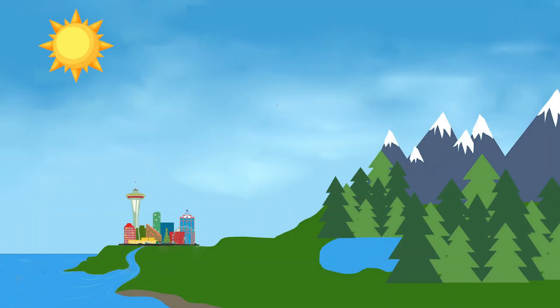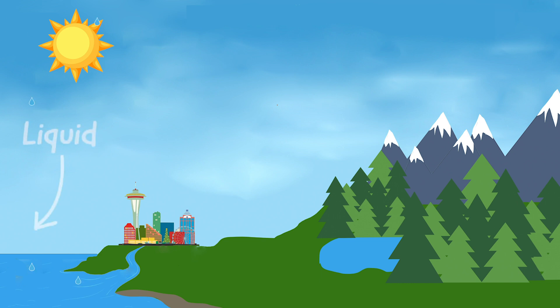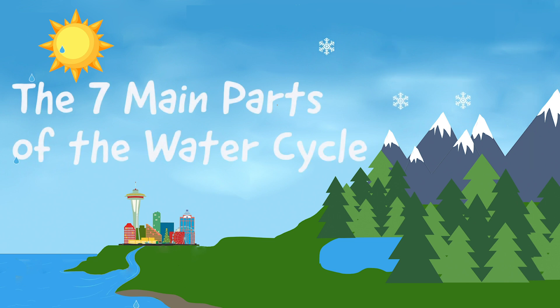It's because of the planet earth's grand recycling program called the water cycle. In the water cycle, water changes forms between liquid, solid as in ice, and gas as in water vapor. There are many parts of the water cycle, but today we are just going to review seven main parts.